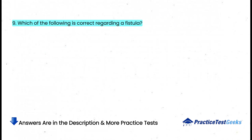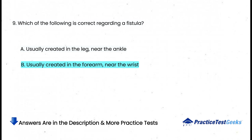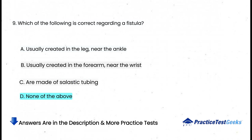Which of the following is correct regarding a fistula? a. Usually created in the leg, near the ankle, b. Usually created in the forearm, near the wrist, c. Are made of silastic tubing, d. None of the above.